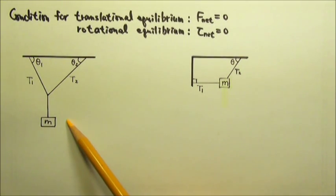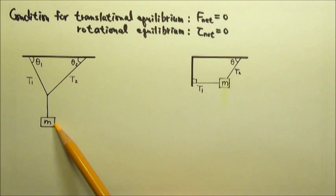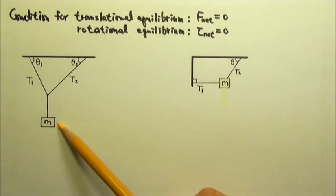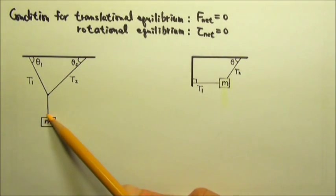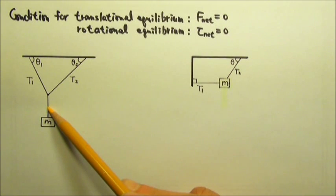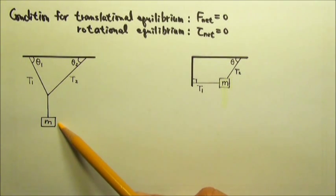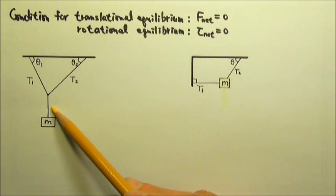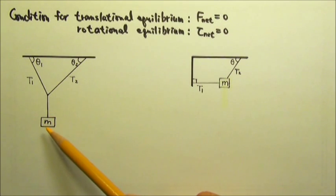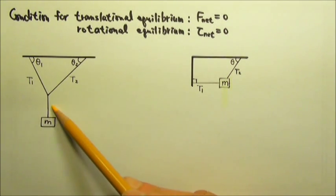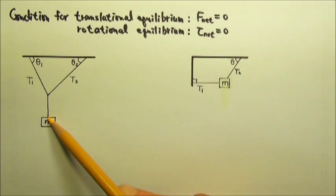If we draw the force diagram for this box, we would only have mg going down and the tension in this string going up. Because this box is at rest, that means the tension equals the weight that's hung under, so T in this string is mg.